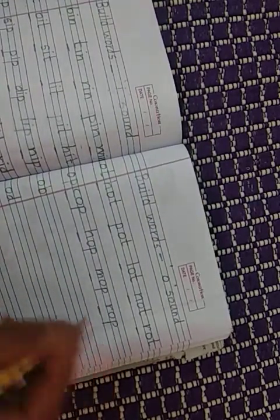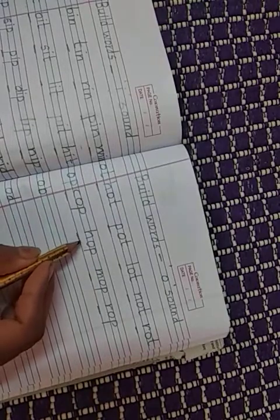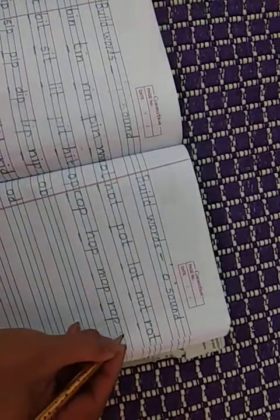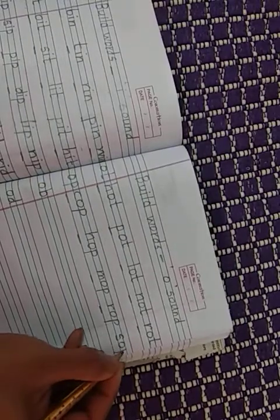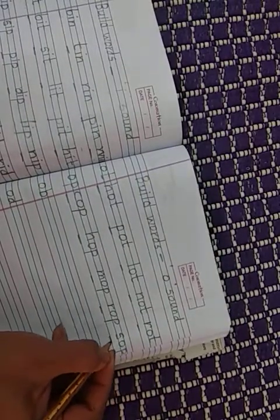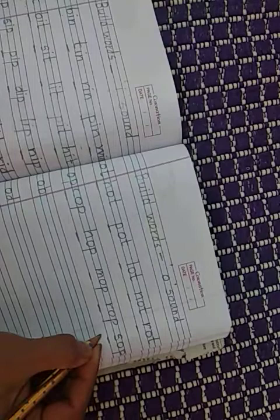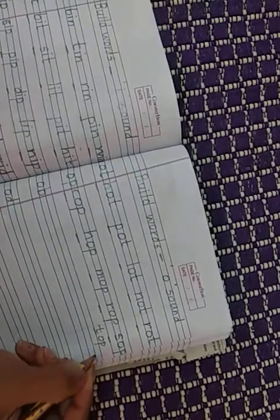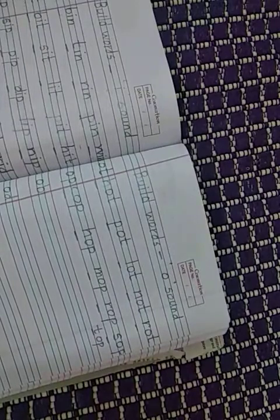Then cop, hop, mop, rop, and sop: S, O, P, sop. Or you can say T, O, P, top. There are more and more words as and when we form.